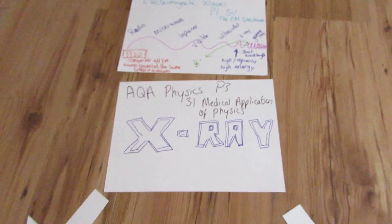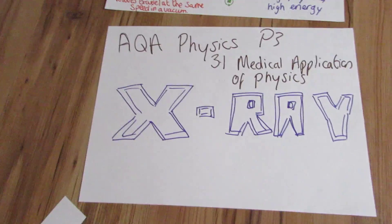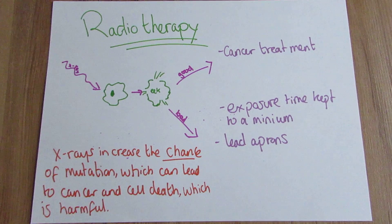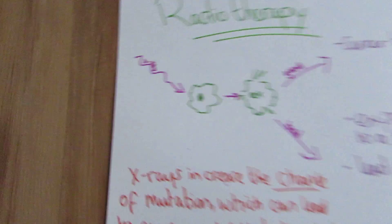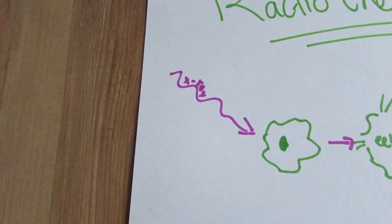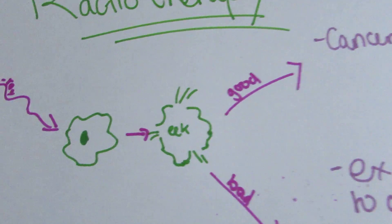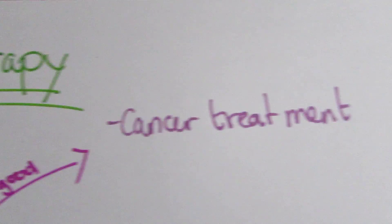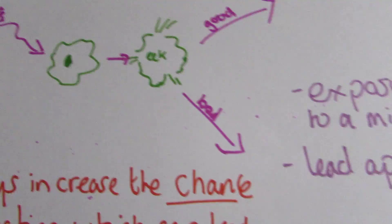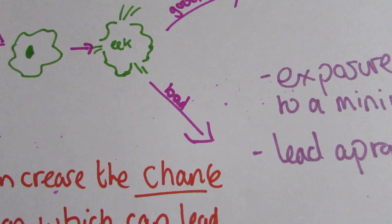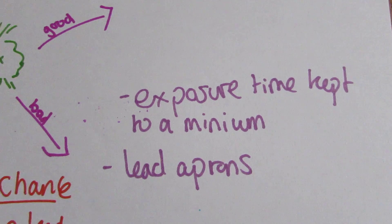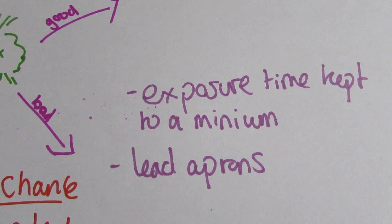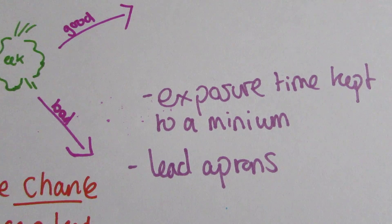Now the other thing that x-rays are used for is radiotherapy. You send a beam of x-ray to a cell and it kills the cell. Now this can be good for cancer treatment, or this can be bad, which is why we need to keep the exposure time to a minimum, and people working with x-rays need to wear lead aprons.